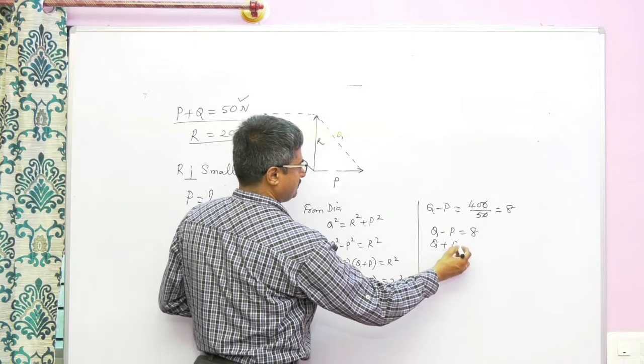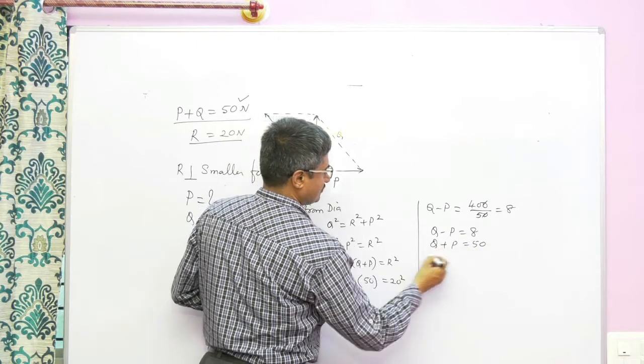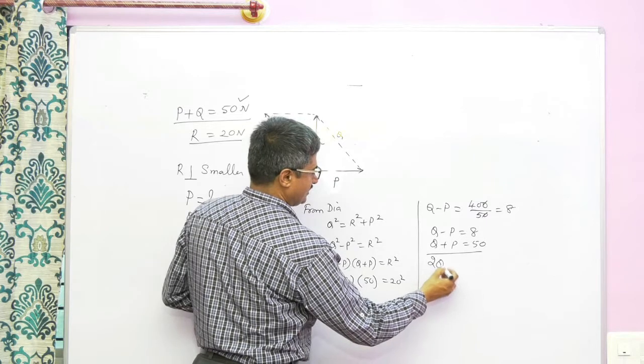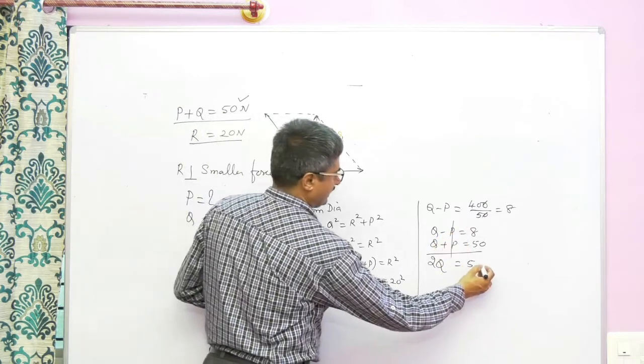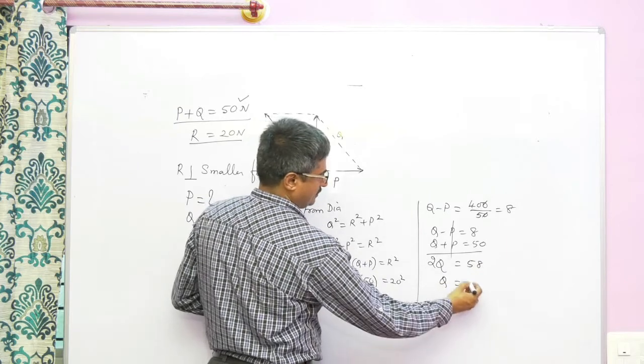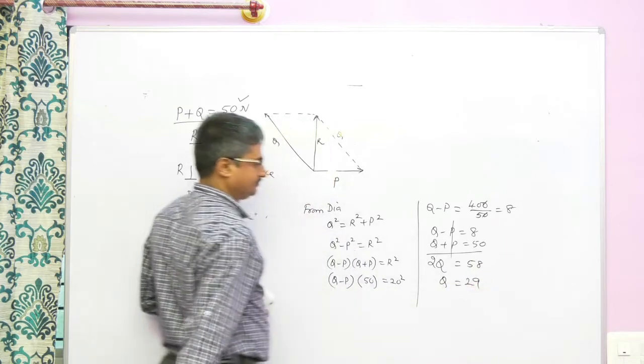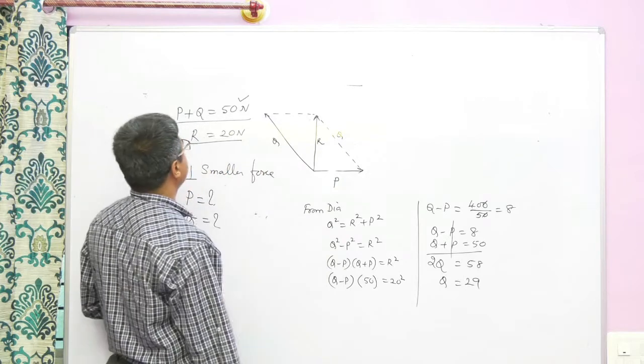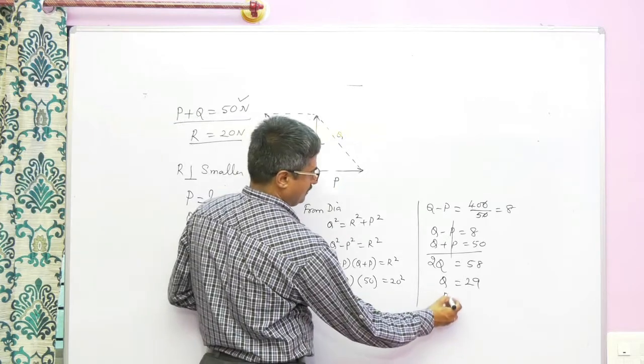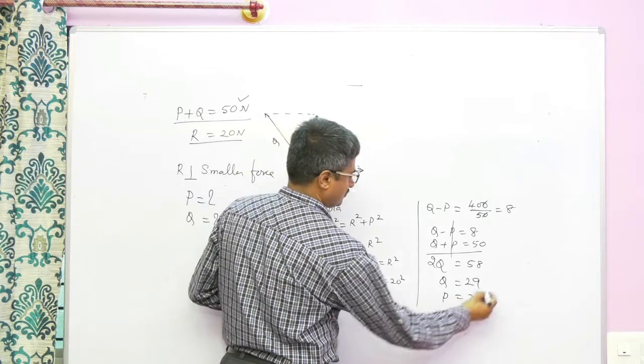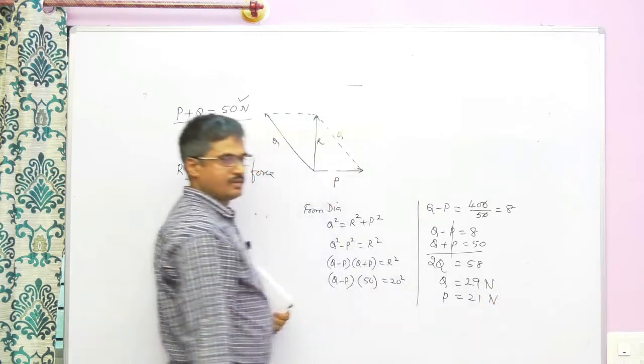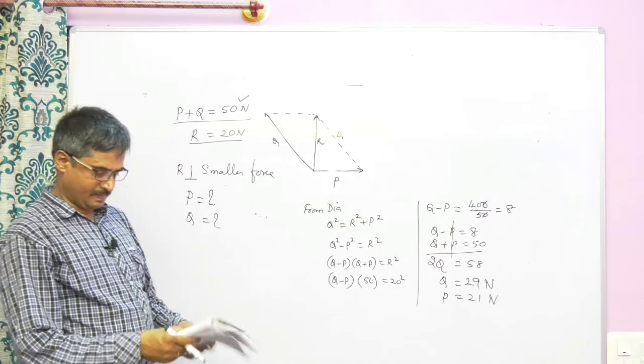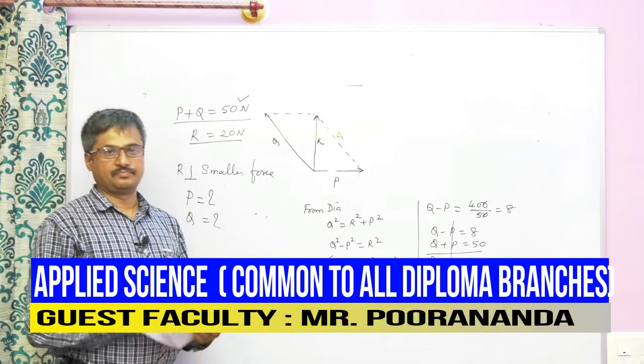Q plus p is 50, so therefore add these two. 2q equals 58, therefore q equals 29. If q is 29, p equals 21. So q is 29 Newton and p is 21 Newton. So this is the second example.